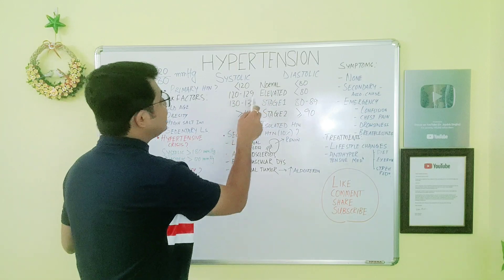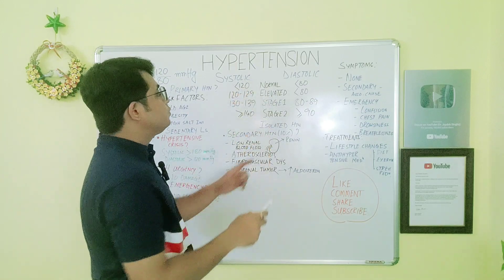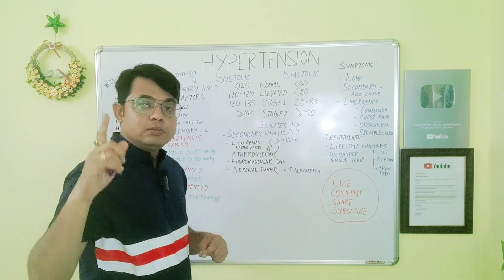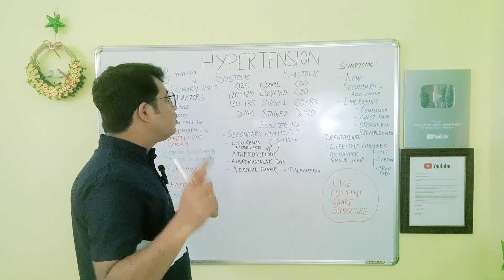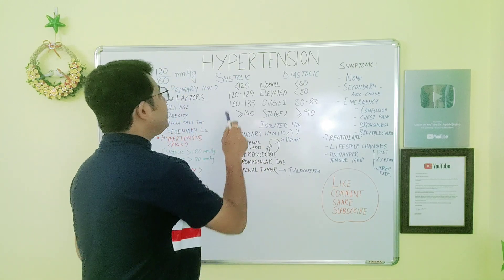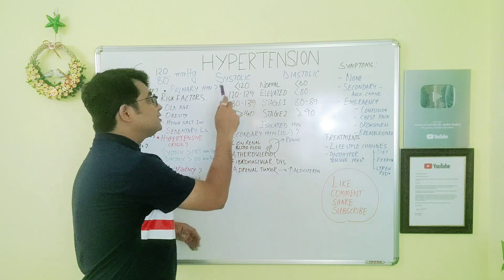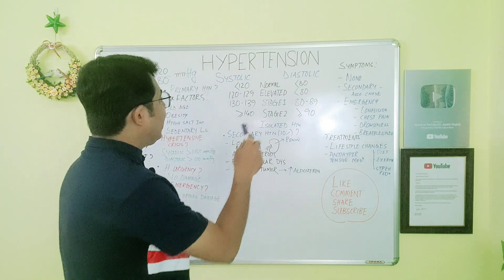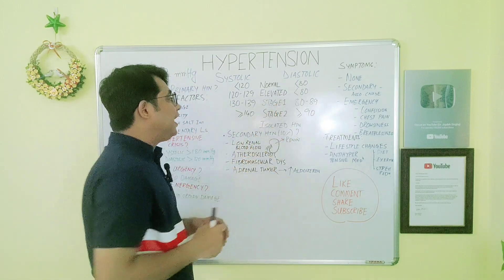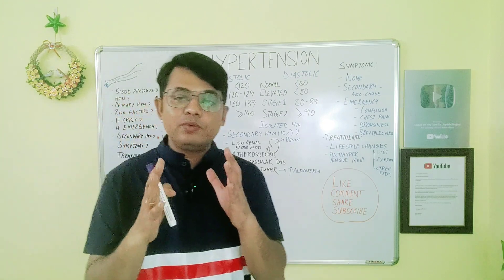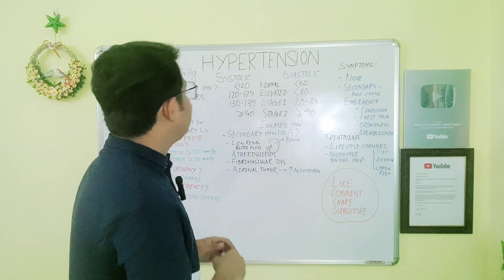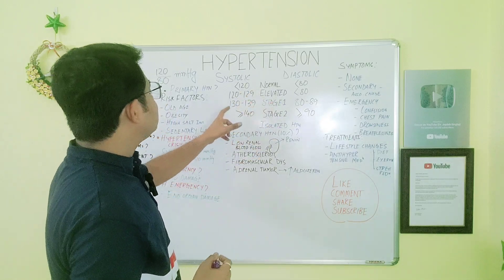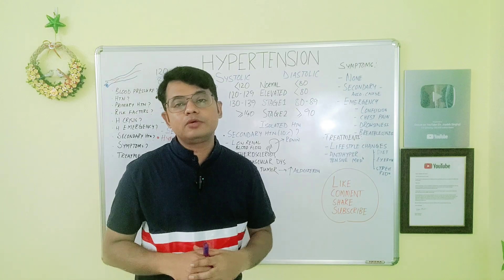Normal blood pressure is when the systolic blood pressure is less than 120 and the diastolic blood pressure is less than 80. When we call it elevated blood pressure, that is when the systolic blood pressure is within 120 to 129 millimeter of mercury and the diastolic blood pressure is less than 80 millimeter of mercury. Stage 1 hypertension is when the systolic blood pressure is between 130 to 139 millimeter of mercury.